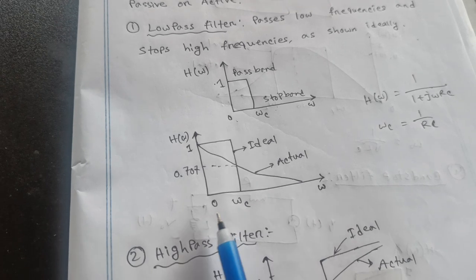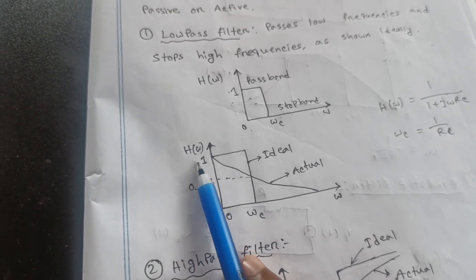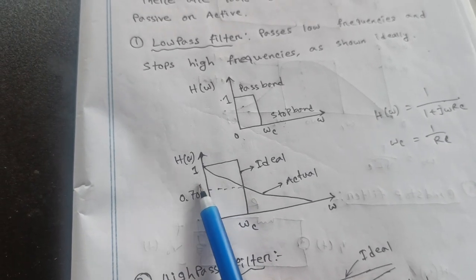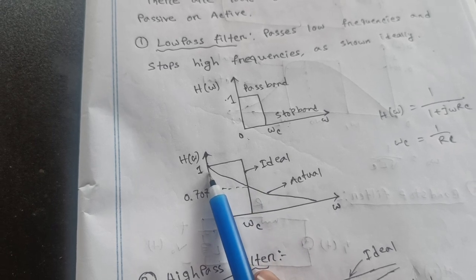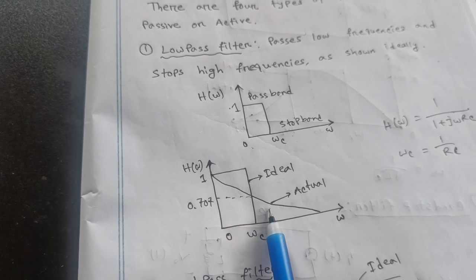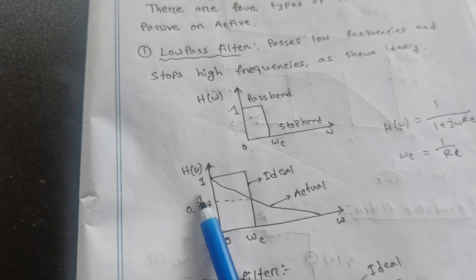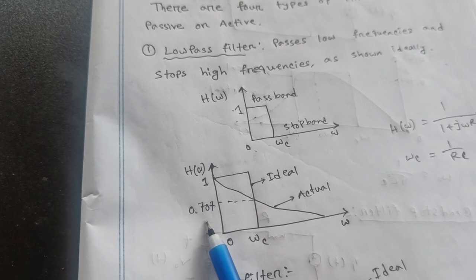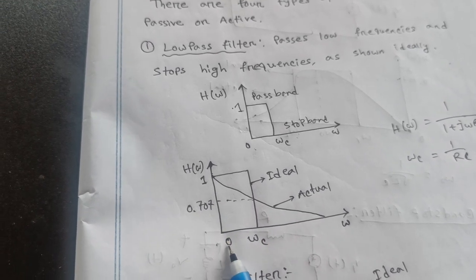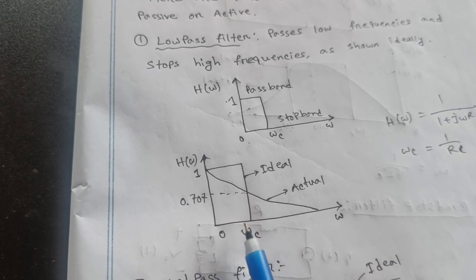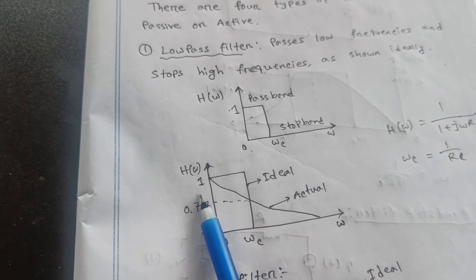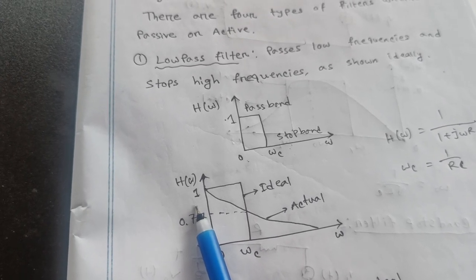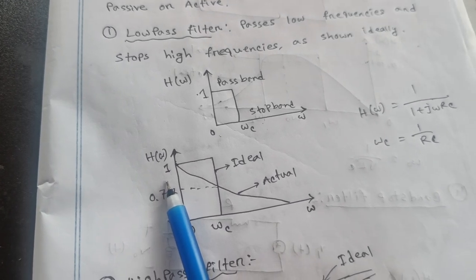On the other hand, H omega, that means ideal factor and actual factor, 0.707 and 0 omega c. Then frequency high and filter low. That means low pass filter.